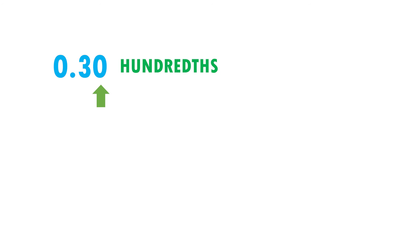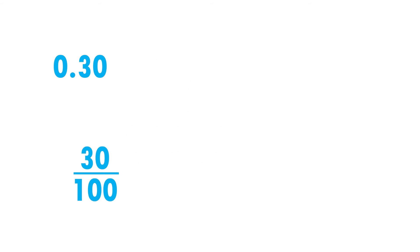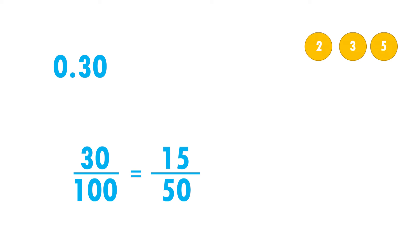Now I have 0.30, which has digits in the tenths and hundredths positions, so in the numerator I put 30 and in the denominator I put 100 because they are hundredths. Both numbers can be divided by 2: 30 divided by 2 equals 15 and 100 divided by 2 equals 50. Now both numbers can no longer be divided by 2 or by 3, but they can be divided by 5: 15 divided by 5 equals 3 and 50 divided by 5 equals 10. Therefore 0.30 equals 3/10.